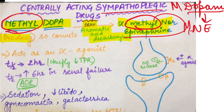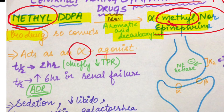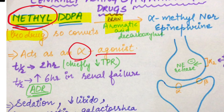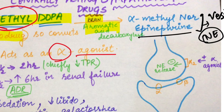Methyl dopa is converted into methyl norepinephrine. It acts as an alpha-2 agonist — agonist means it stimulates the receptor's function, while antagonist means it inhibits it. Alpha methyl norepinephrine is present in vesicles within adrenergic neurons, where it takes the place of norepinephrine and is released from there.